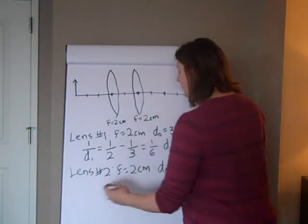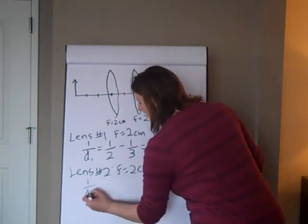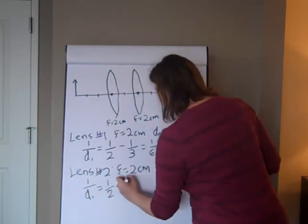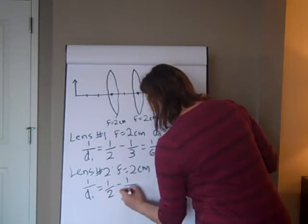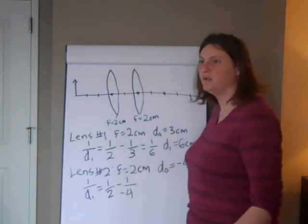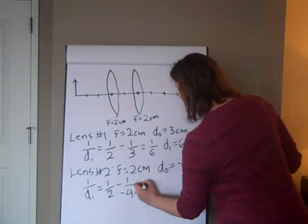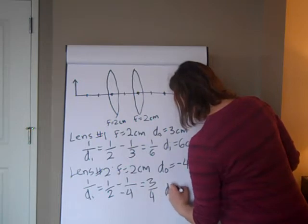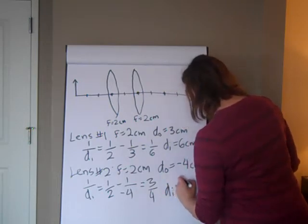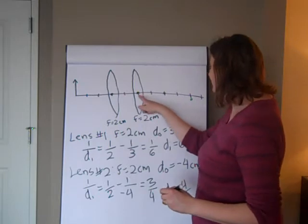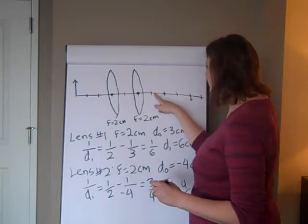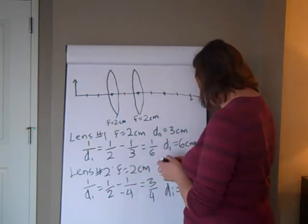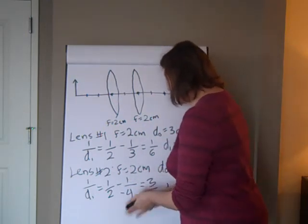So we're going to go to the equation. One over di equals one over the focal length — one half — minus one over the distance, one over negative four. So this is one half plus one fourth, which is three fourths. That means our distance is four thirds, or about one and a third. It should be about right there behind the lens.